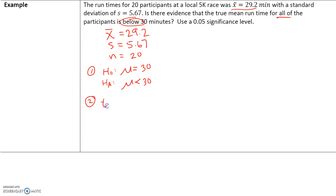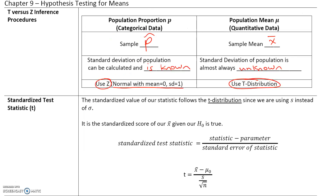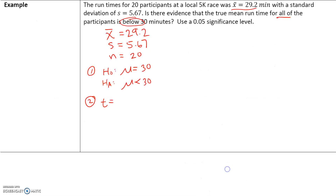Step two, let's calculate our test statistic t. Because the population standard deviation is unknown, we will use the t-distribution and the t-test statistic. The formula is t equals the sample mean minus the null value divided by s over the square root of n. So our sample mean is 29.2, our null value is 30, divided by the sample standard deviation 5.67 over the square root of 20.